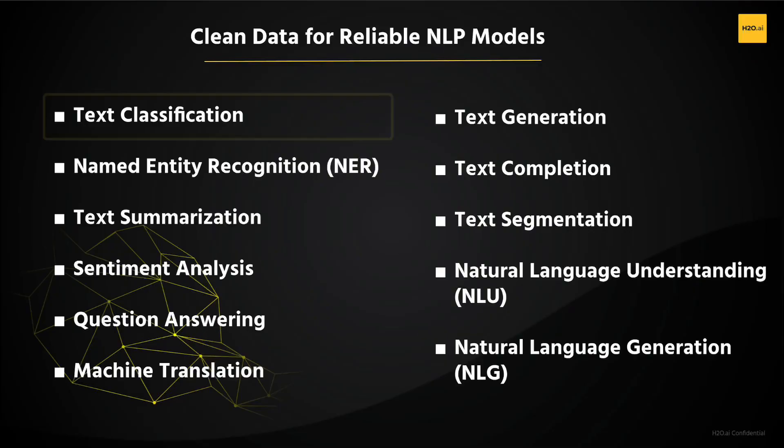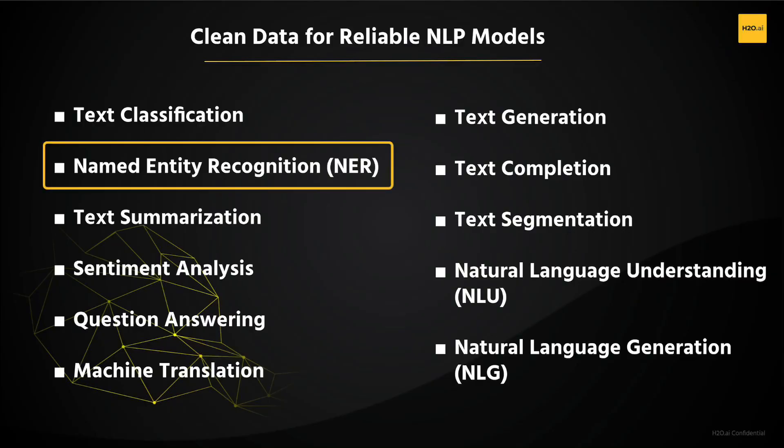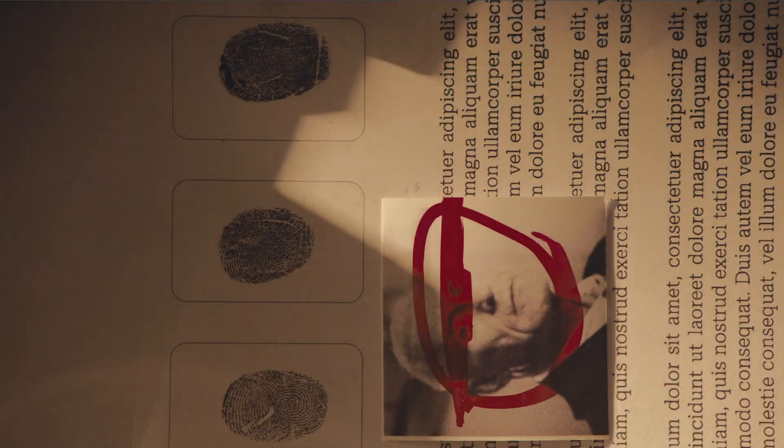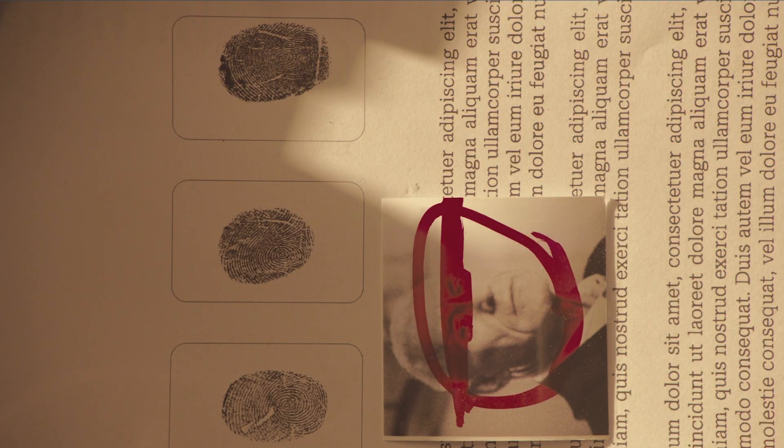Downstream NLP tasks leverage the capabilities of language models to perform tasks such as text classification — assigning a label or category to a given text, such as sentiment analysis (positive or negative) or topic classification — and named entity recognition — identifying entities, for example, names of persons, organizations, and locations, within the text.